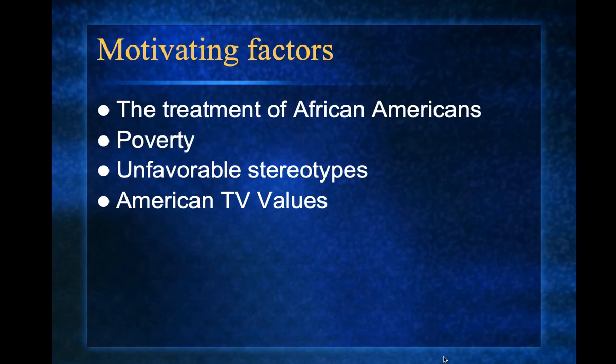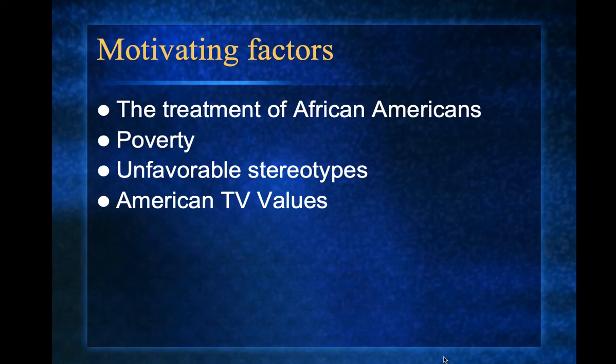In the rebellion against 1950s conformity, there's a lot going against it too. You have the beginning of the civil rights movement — the treatment of African Americans, particularly in the South, is at an all-time low. There are a lot of people in poverty. Even though average family income tripled, there are still many in poverty, unfavorable stereotypes with minorities, and American TV values that simply could not be attained — nobody is that perfect.